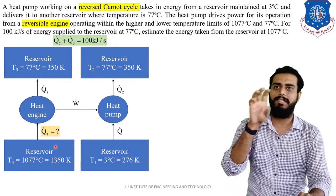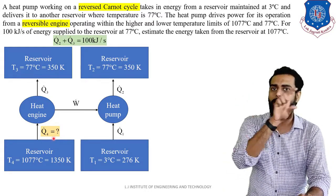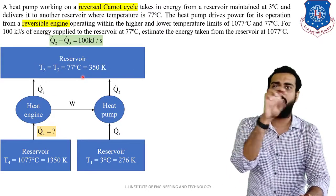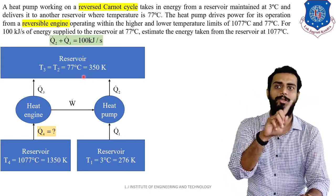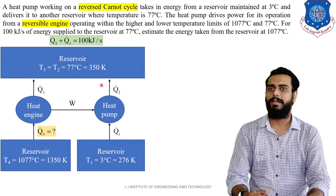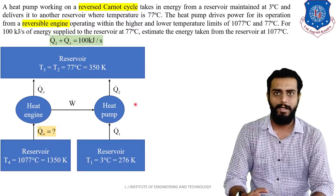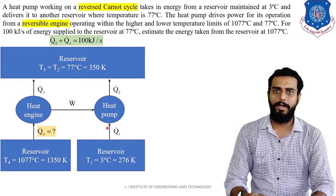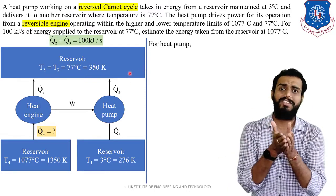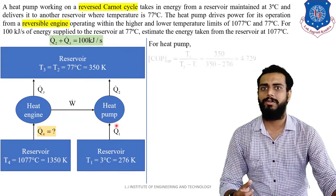Since the 77 degrees Celsius reservoir is common to both devices, we replace the drawing with a common reservoir, so Q2 + Q3 = 100 kJ/s together. We will start with the heat pump. To evaluate the performance of the heat pump, we use the COP — coefficient of performance. COP = T2 / (T2 − T1) for a reverse Carnot cycle.